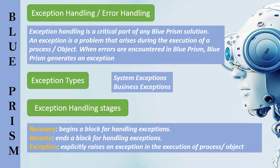This method allows a business to process high volume work while maintaining operational accuracy. This exception handling is done with a set of stages we have not used before. This can be achieved by using recovery, resume, and exception stages. Recovery and resume stages are used to attempt to solve and move on from an exception.